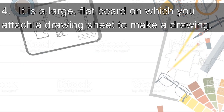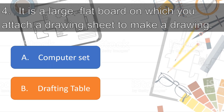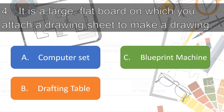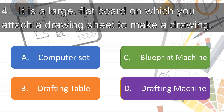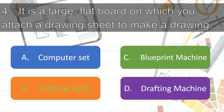Number 4: It is a large, flat board on which you attach a drawing sheet to make a drawing. Letter A — Computer Set, Letter B — Drafting Table, Letter C — Blueprint Machine, or Letter D — Drafting Machine. It's Letter B, Drafting Table. Very good!